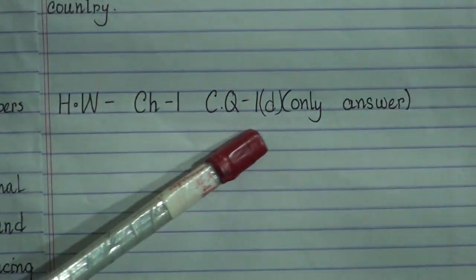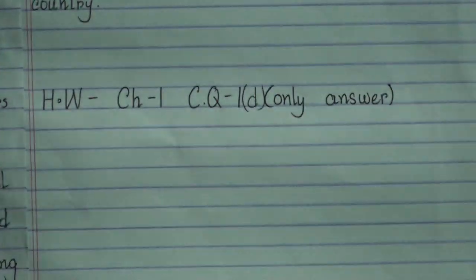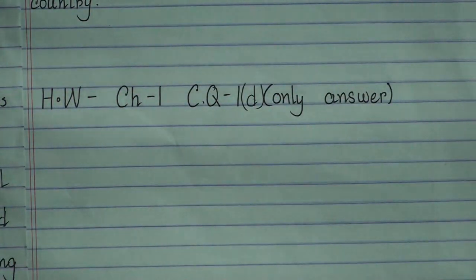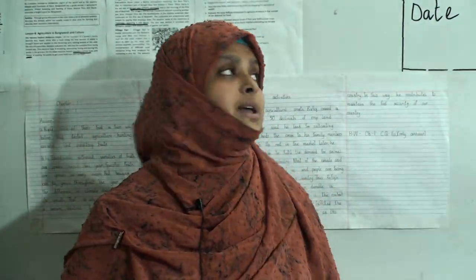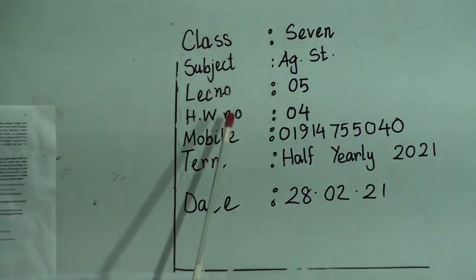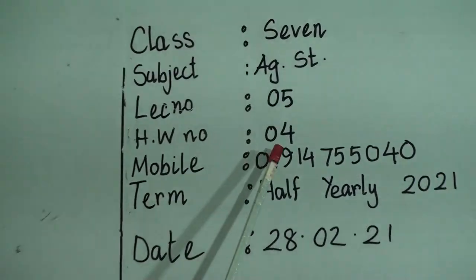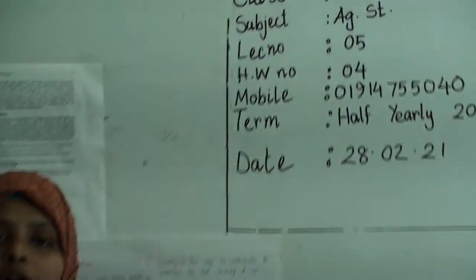Now you have to do your SW. Your SW is Chapter 1, CQ number 1(d). Write only the answer in your SW. Don't forget to be careful in your writing, spelling, and sentence construction. Also mention SW number 4 and Lecture number 5. Allah Hafez, Assalamu Alaikum.